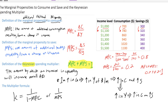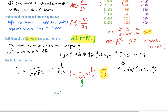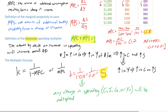Households will either save or spend one hundred percent of any increase in income. With an MPC of 0.8 we can calculate the Keynesian spending multiplier: K equals 1 over (1 minus 0.8), or 1 over the MPS of 0.2, and one divided by 0.2 equals five. So the Keynesian spending multiplier is five. Any change in spending — and there are four types of aggregate expenditures: consumption, investment, government spending, or net exports — will be multiplied five times throughout the economy.